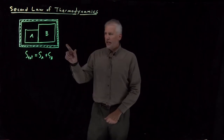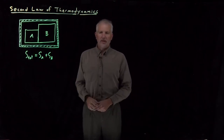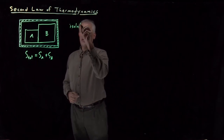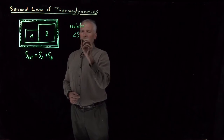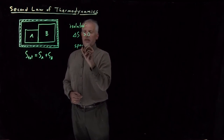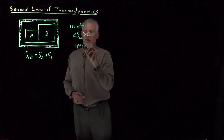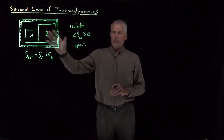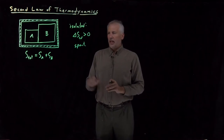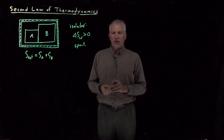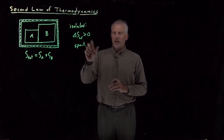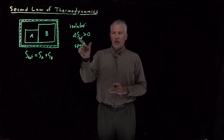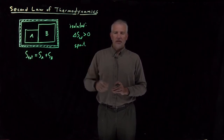We've seen that if we have an isolated system — a system that's thermally isolated from its surroundings — then for that isolated system, a spontaneous process will be one that increases the entropy of the system as a whole. That's essentially because if the energy is conserved, entropy is the only quantity that matters, and increasing entropy causes the system to have a higher multiplicity, higher probability. So moving towards higher multiplicity or higher probability or higher entropy is a spontaneous process.